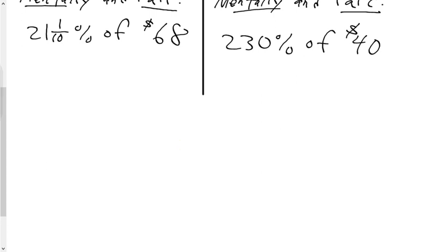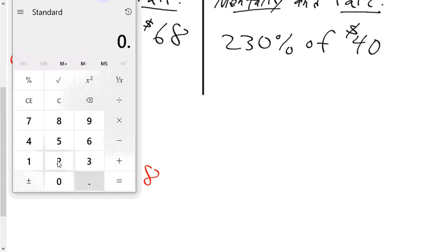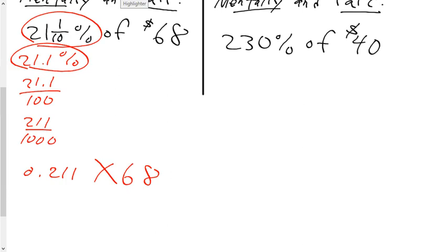Now, if we do this with a calculator, what do we have to do? You've got to find out the decimal. Correct. Excellent. So 21 and one-tenth percent is 0.211. So once we have that written out, this is all you need to do with a calculator. So 0.211 multiplied by $68 is the same answer we got before, $14.34 and eight-tenths of a cent. Any questions on that?